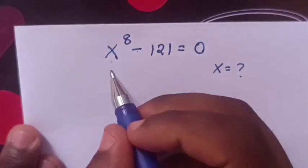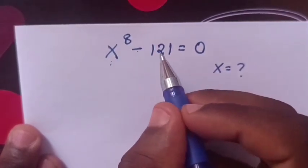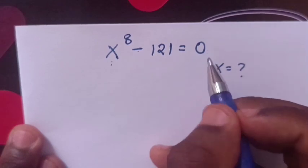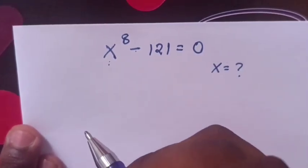Hello. To solve x power 8 minus 121 equals 0, find the value of x.